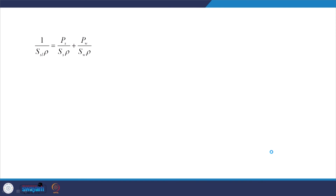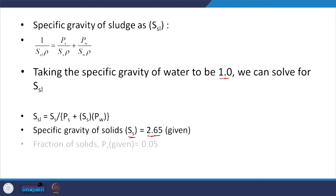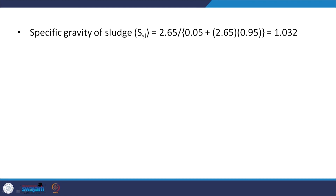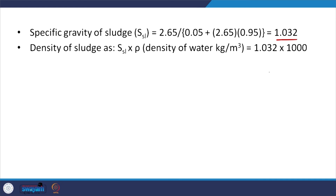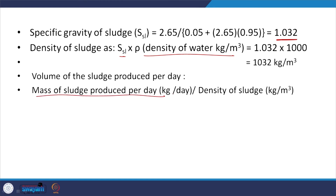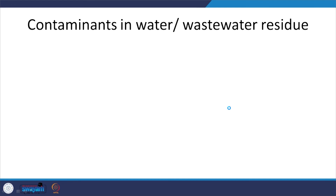This is one of the equations we looked at earlier, and we have most of the relevant variables. Taking the specific gravity of water to be 1, we have the relevant equation. Specific gravity of the solids is given as 2.65, and PS and PW are also given — 5% solid means 95% water. Plugging it in, the specific gravity of sludge is 1.032 — slightly higher than that of water, denser than water. Density of sludge equals specific gravity times density of water. So, volume of sludge produced per day equals mass of sludge divided by density. With the mass of sludge produced and the density calculated, the volume is approximately 41.5 m³ per day.